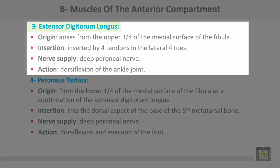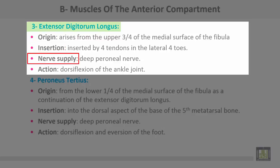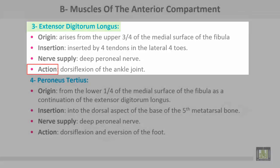The third muscle is extensor digitorum longus, which takes origin from the upper three-quarters of the medial surface of the fibula. It is inserted by four tendons into the lateral four toes. Nerve supply: deep peroneal nerve. Action: dorsiflexion of the ankle joint.